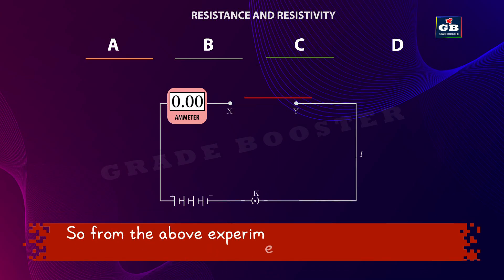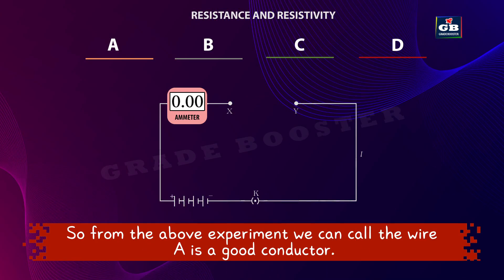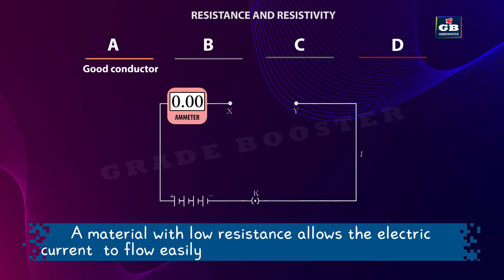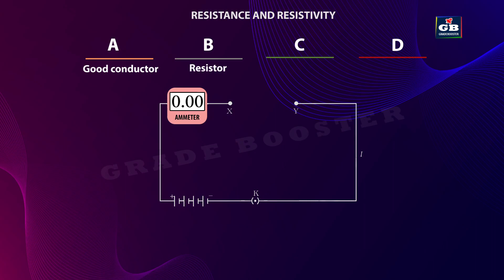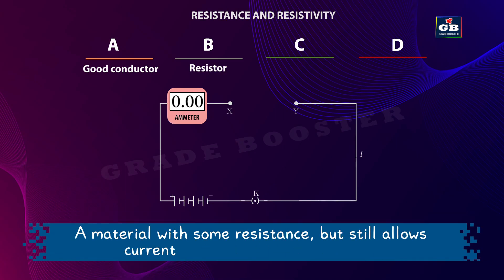From the above experiment, we can identify wire A as a good conductor. A material with low resistance that allows electric current to flow through it easily is called a good conductor. Wire B we can call a resistor — a material with some resistance that still allows current to flow is called a resistor.